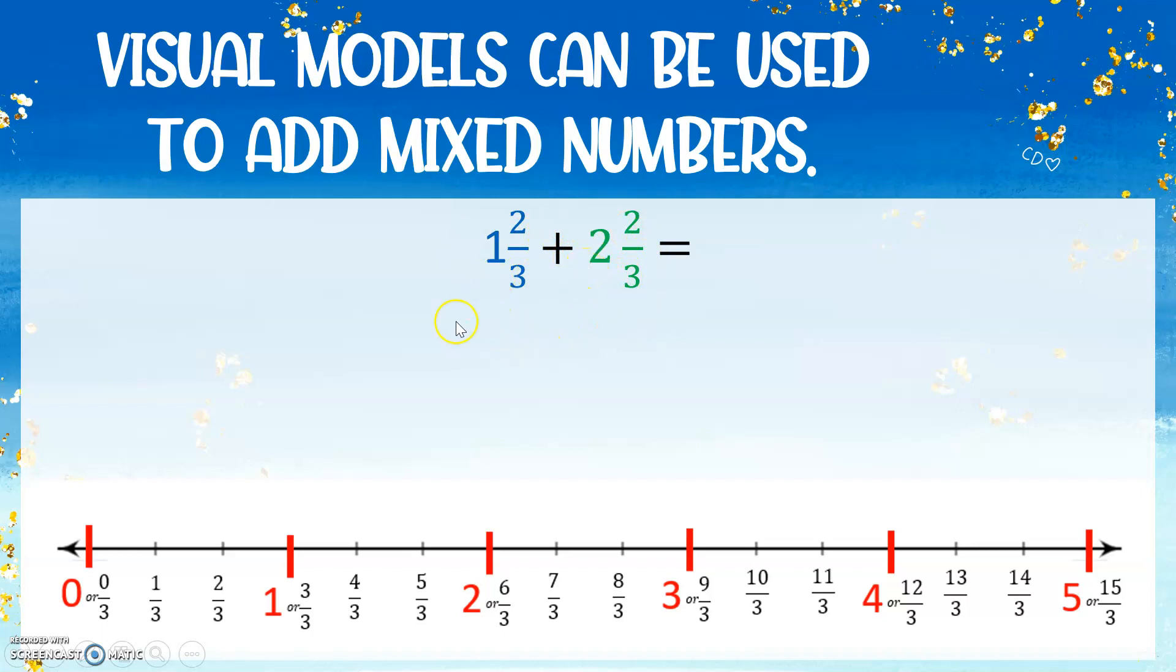So first we have our 1 whole. So we're going to jump from 0 to 1 in blue to represent our 1 in 1 and 2 thirds. And then we're going to jump 2 more thirds because we have a fraction of 2 thirds. So 1 third, 2 thirds. Now we're going to use the same size jump for our 2, and we're going to have 2 of those whole jumps. So 1 whole, 2 wholes. That represents the 2 in 2 and 2 thirds.